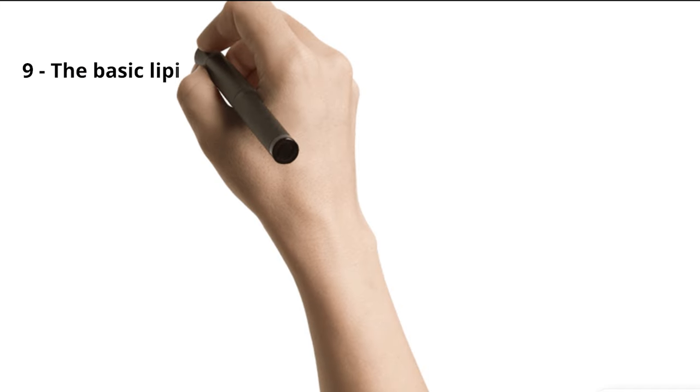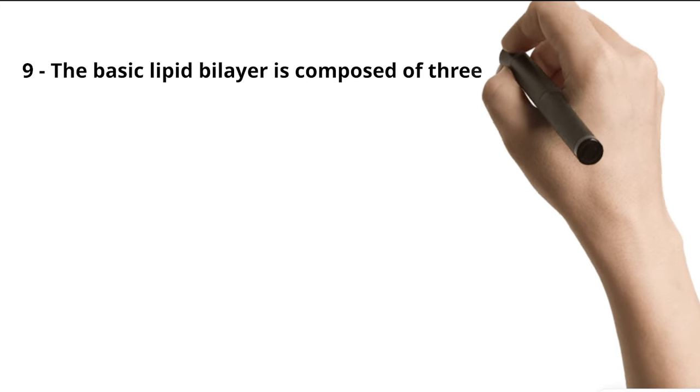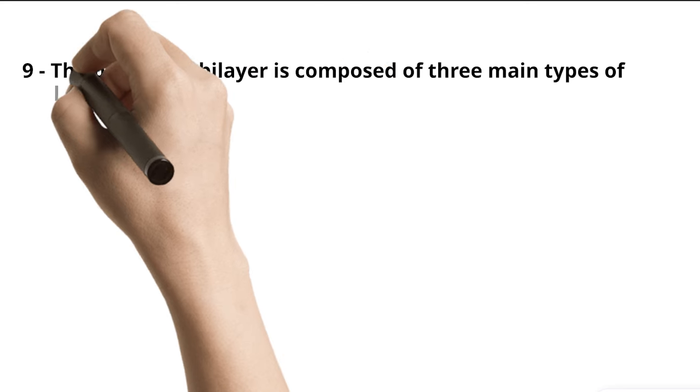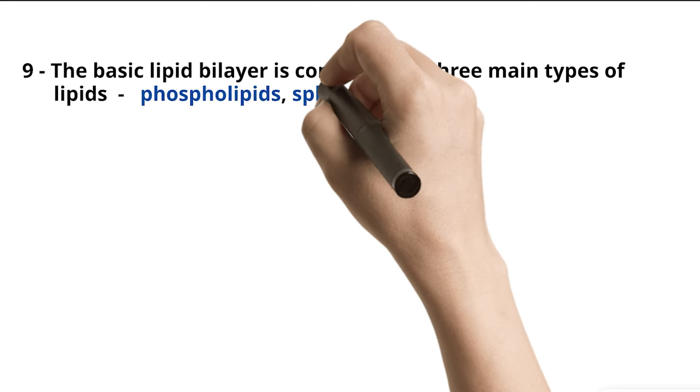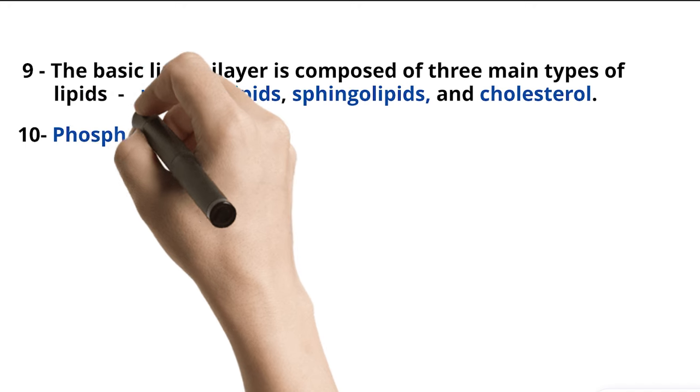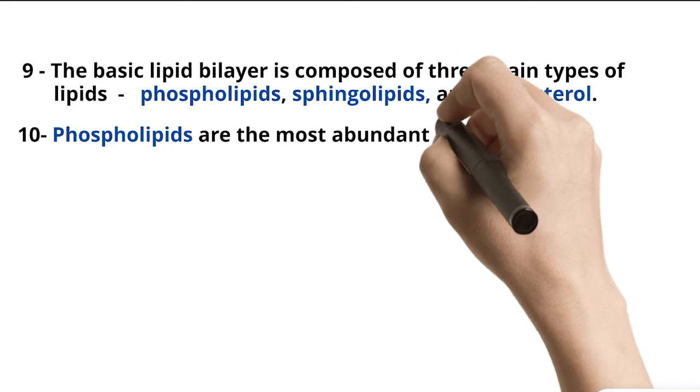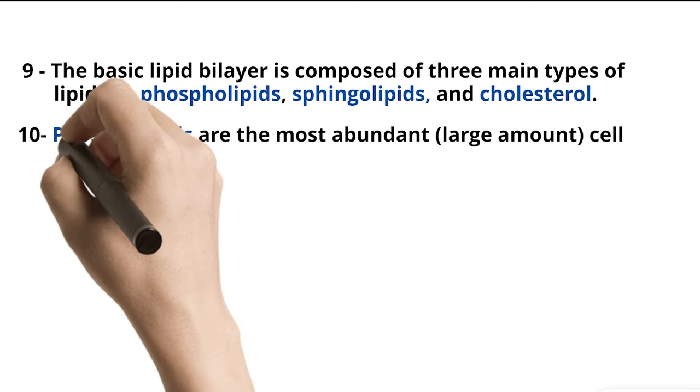9. The basic lipid bilayer is composed of three main types of lipids: phospholipids, sphingolipids, and cholesterol. 10. Phospholipids are the most abundant, large-amount cell membrane lipids.